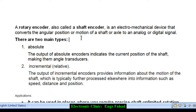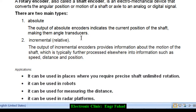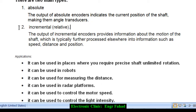There are two main types. Number one: Absolute — the output of an absolute encoder indicates the current position of the shaft, making them angle transducers. Number two: Incremental or relative — the output of incremental encoders provides information about the motion of the shaft, which is typically further processed elsewhere into information such as speed, distance, and position.